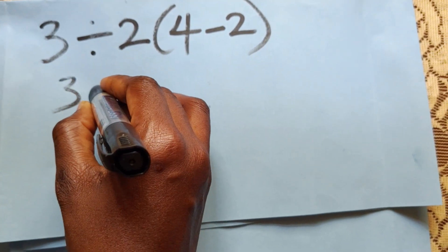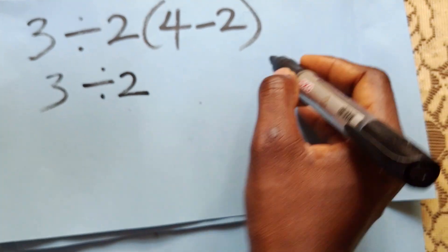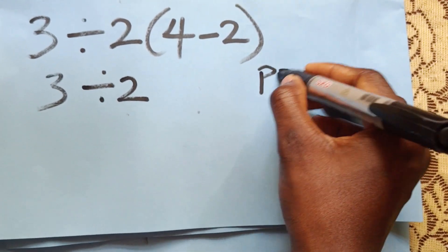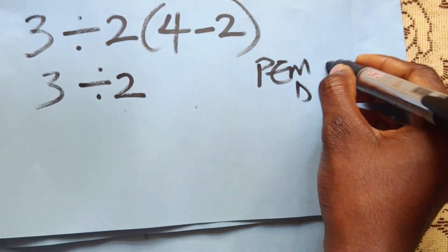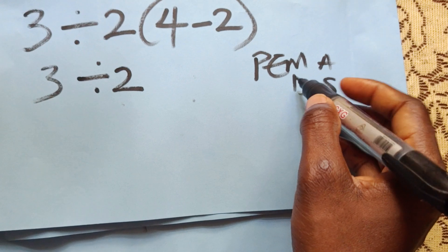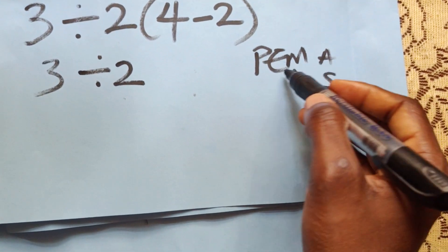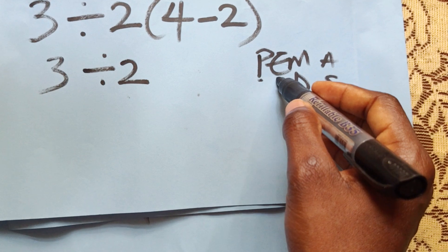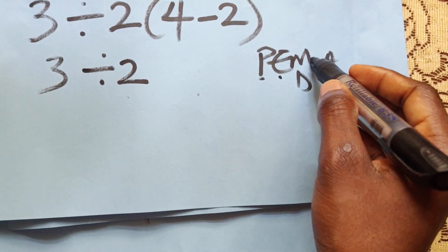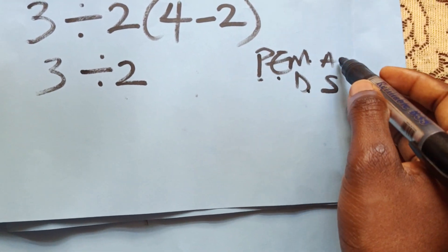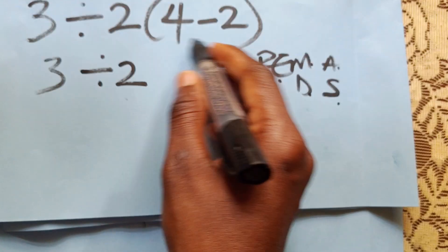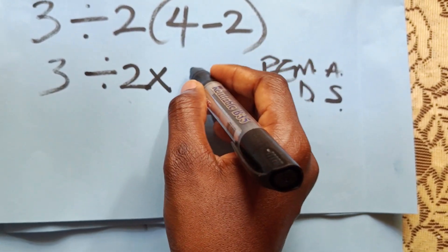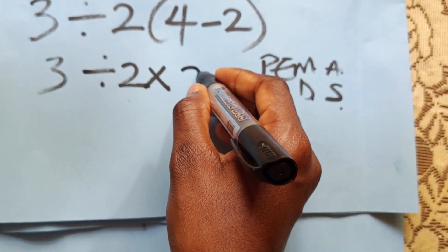Three divided by two — following PEMDAS, you know we have to work with the parenthesis first, before exponents, then before multiplication or division, then addition or subtraction. Opening this, we have times four minus two, which will give us two.